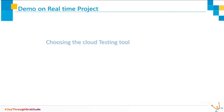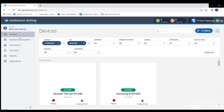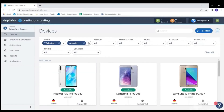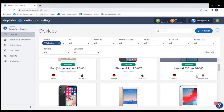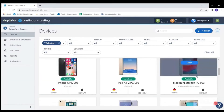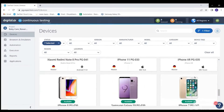First, choosing the cloud testing tool. The project which we are going to automate requires automating only the mobile application. So we have chosen CTest Cloud, XperiTest, which provides services only for mobile devices. We can automate both Android as well as iOS in CTest Cloud.